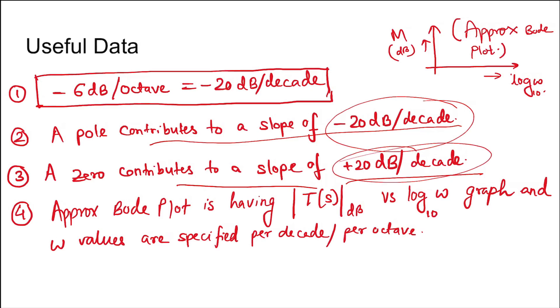The approximate Bode plot has in its x-axis the magnitude of the transfer function in decibels versus the log of angular frequency omega to the base 10. However, the omega values are specified per decade or per octave.